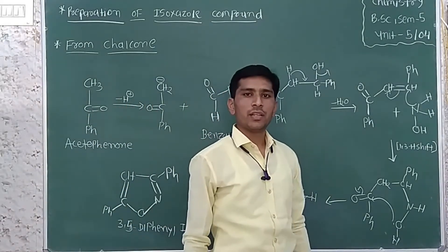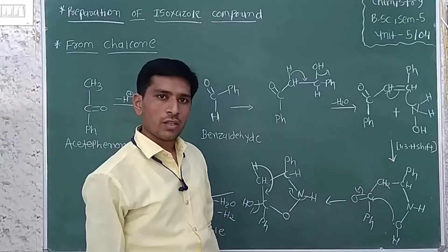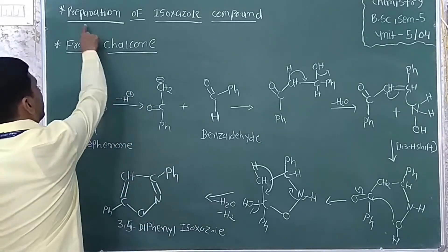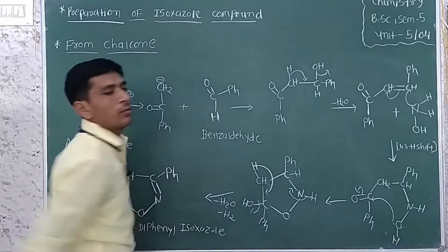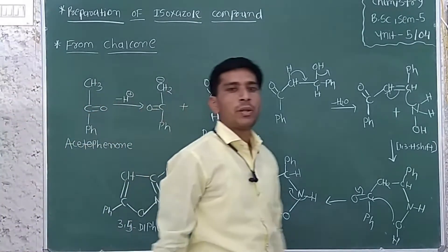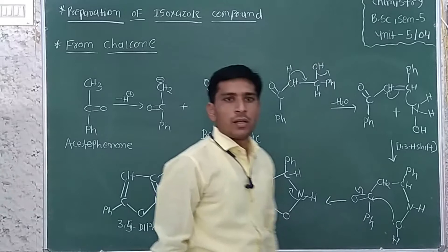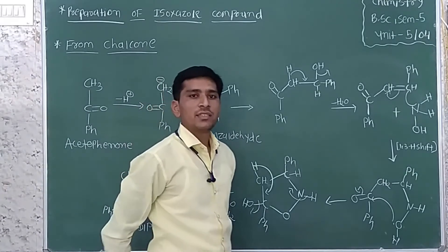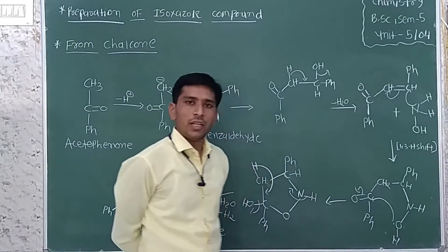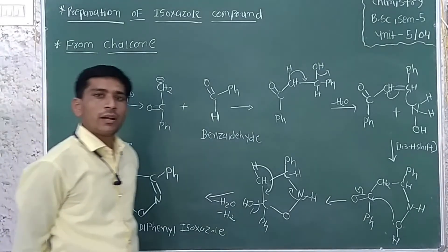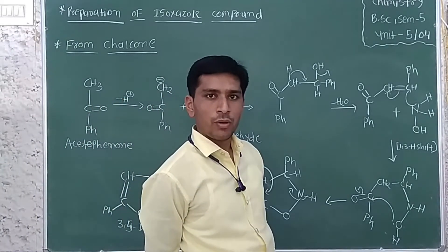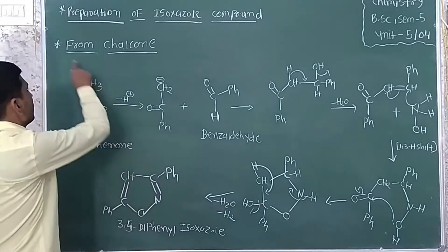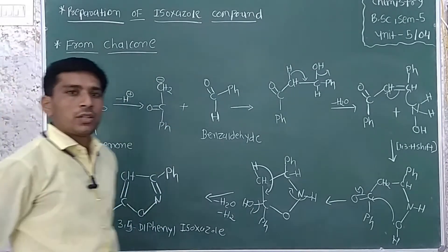In the previous lecture we studied preparation of pyrazole and imidazole. We next study preparation of isoxazole compounds. Isoxazole can be prepared by four methods: first from chalcone, second from Claisen condensation reaction, third from tetramethoxypropane, and fourth from propionaldehyde.